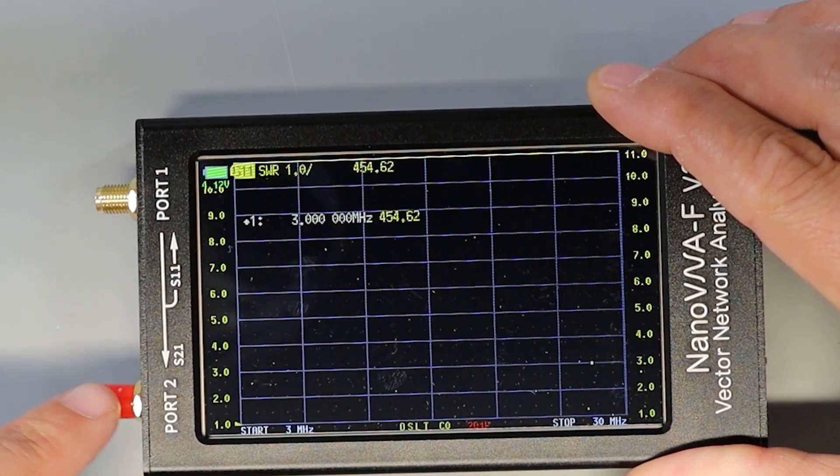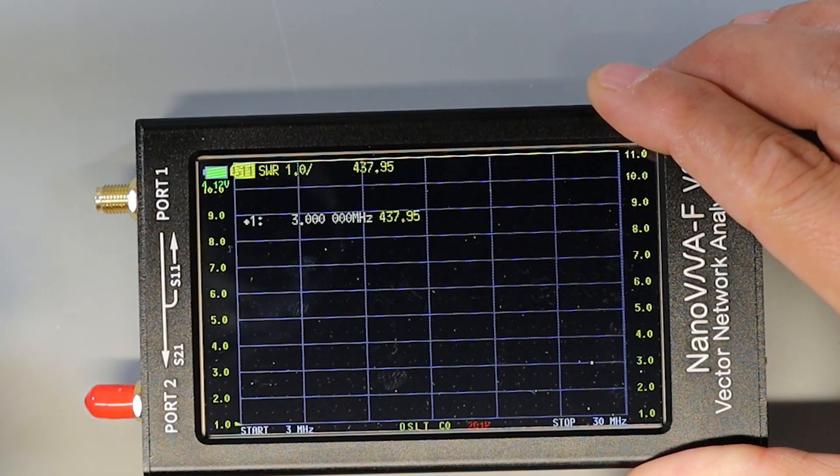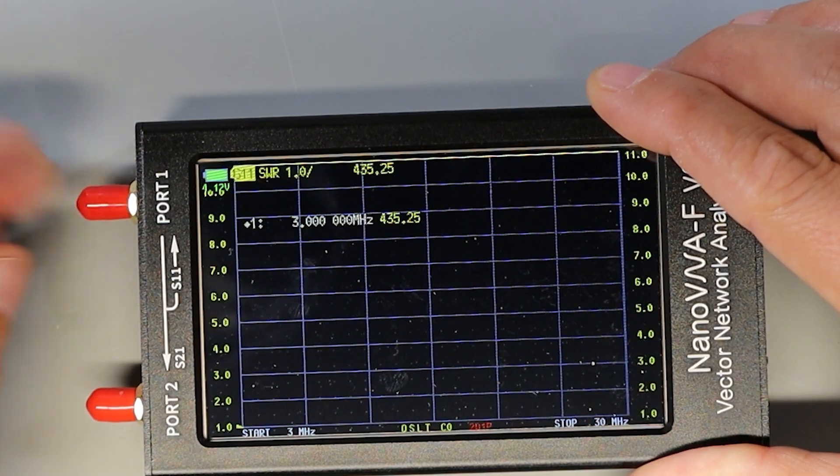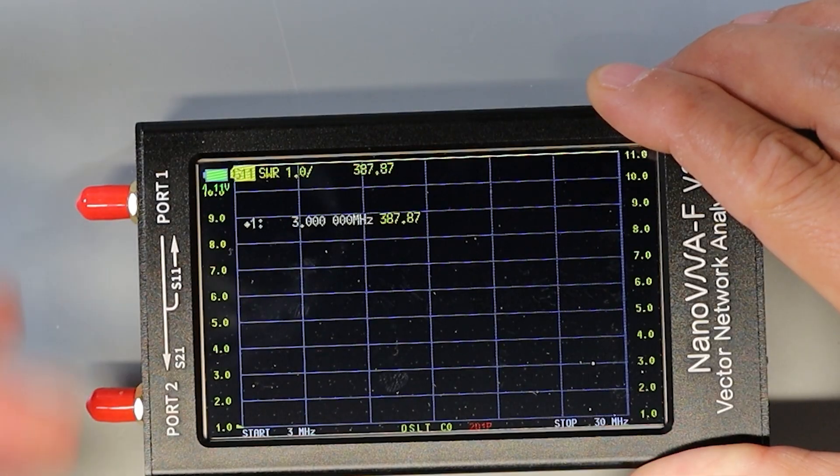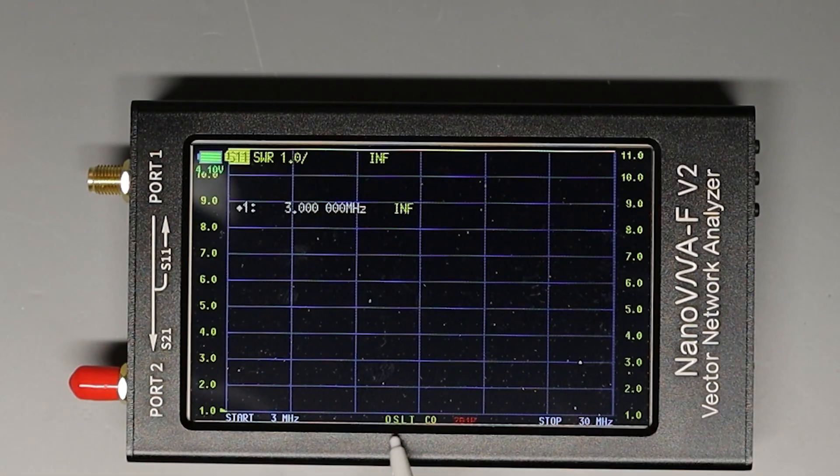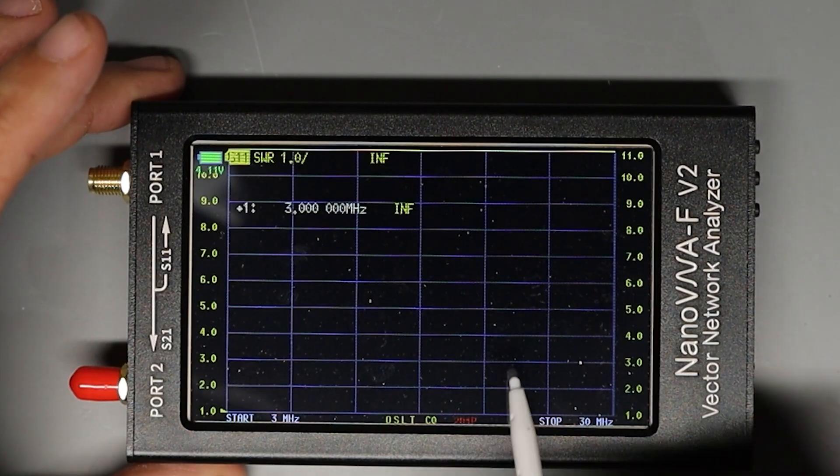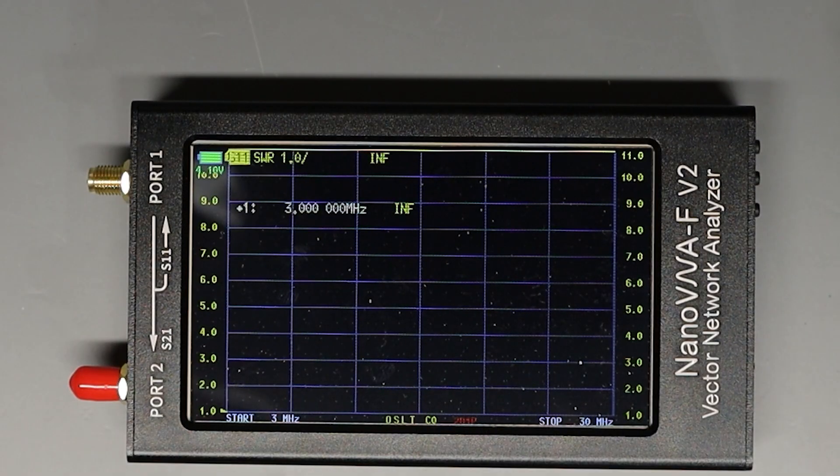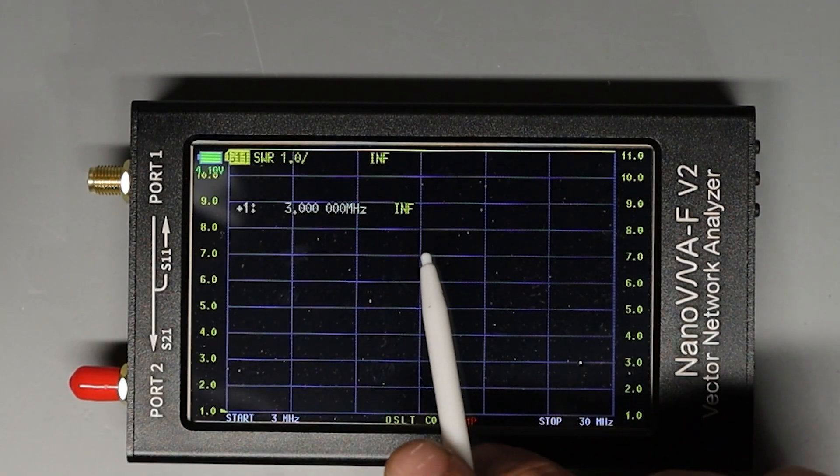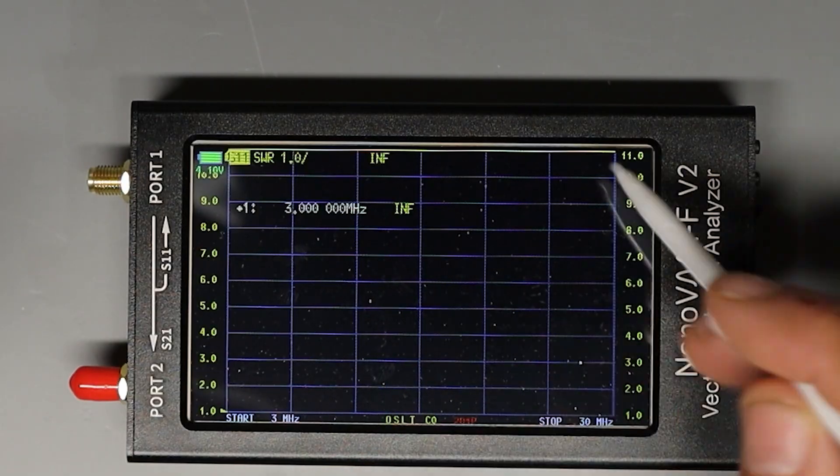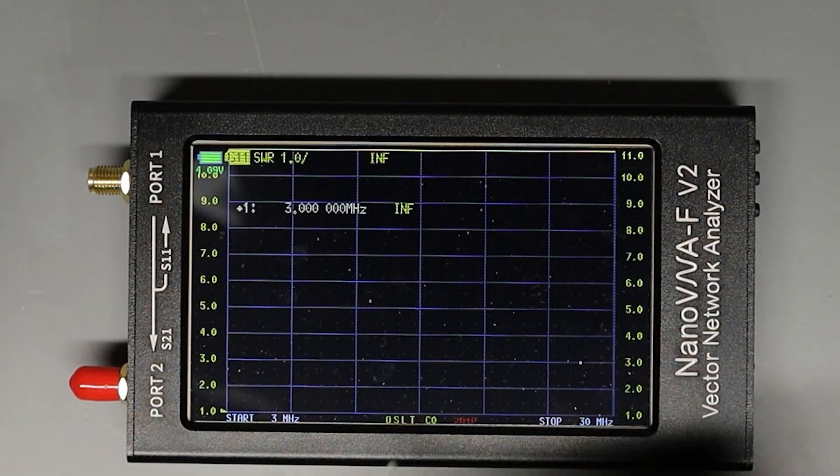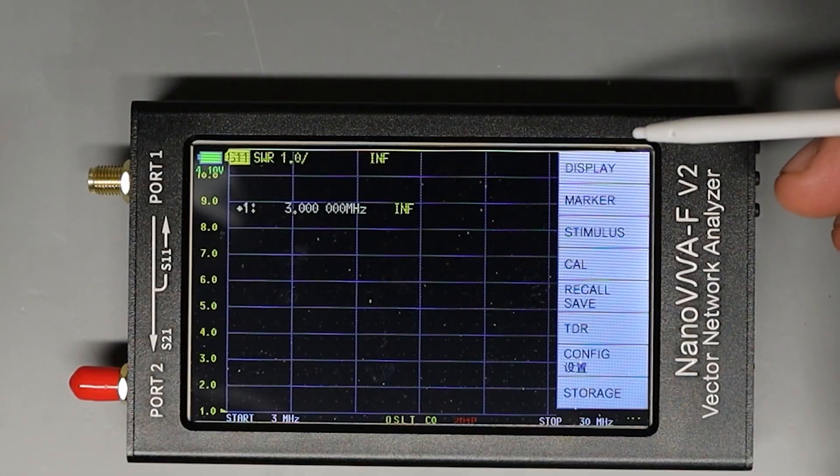One thing to keep in mind is when you're not using these ports it's a good idea to keep the dust caps on them, obviously to keep dust out but to also keep any stray static from getting into the ports. Now that we've got the calibration complete you can see the letters down here at the bottom of the screen are lit up to let us know which calibration modes are set. So at this point now that we're calibrated we could start doing some measurements and in this case SWR measurements because that's what I've got everything set to but I want to back up a step and show you how I've configured the display.